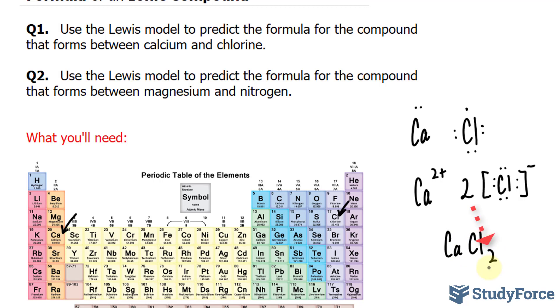Let's move on to question number two. This time we have to use the Lewis model to predict the formula for the compounds that form between magnesium and nitrogen. Let's locate where magnesium and nitrogen are. Magnesium is right here, and nitrogen is right here. This is in the second group, and this is in the fifteenth.